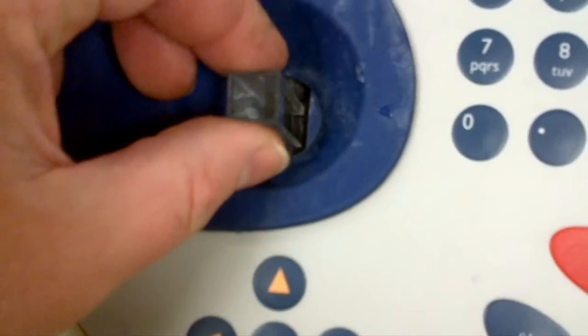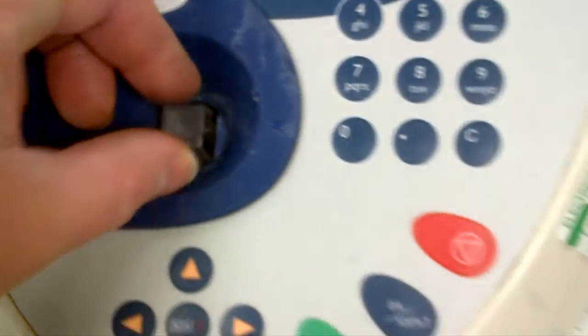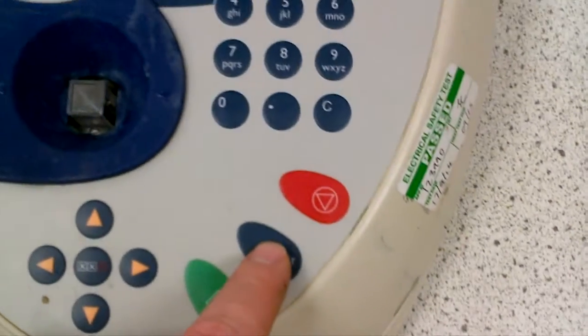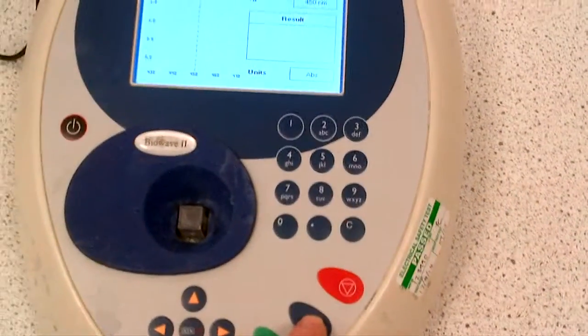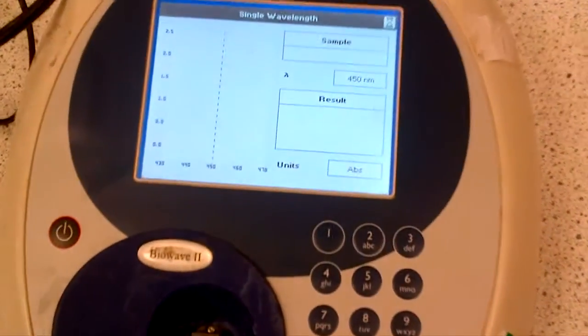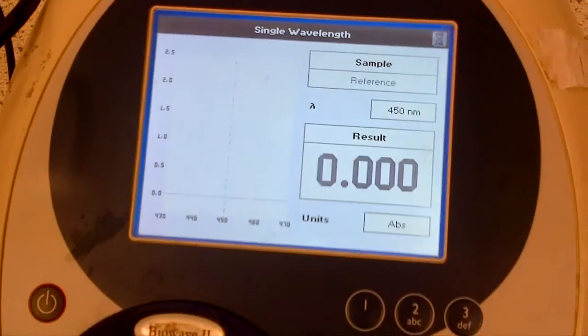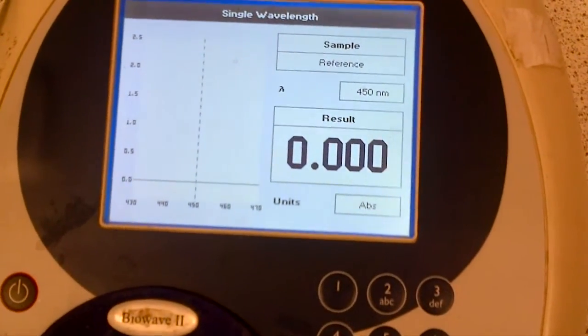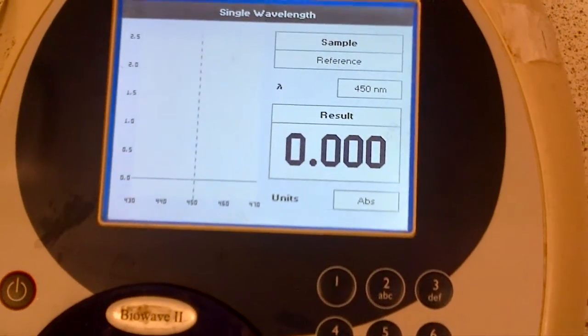So making sure this is clean, put it in, push firmly down, and you need to press blue on the device. Here, for the blank, you'll see the clock appear and hear the sound for it to set towards zero.